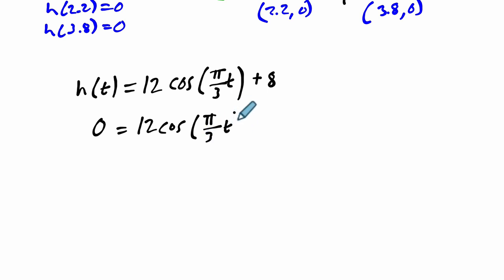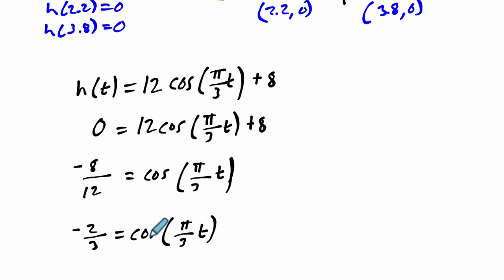Then I begin by doing some basic algebra. Subtracting 8, dividing by 12. So negative 8, and then divide both sides by 12. We get to this step. Then at that point, I might reduce my fraction. Divide by 4 on both sides, it's negative 2 thirds. So we want to know when does the cosine of some angle equal negative 2 over 3.